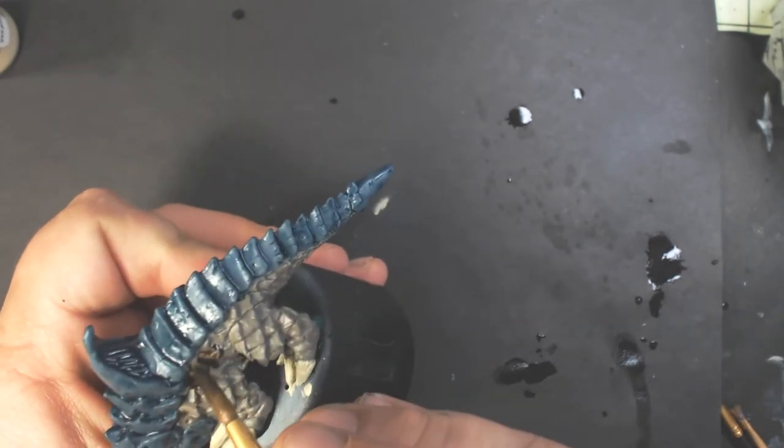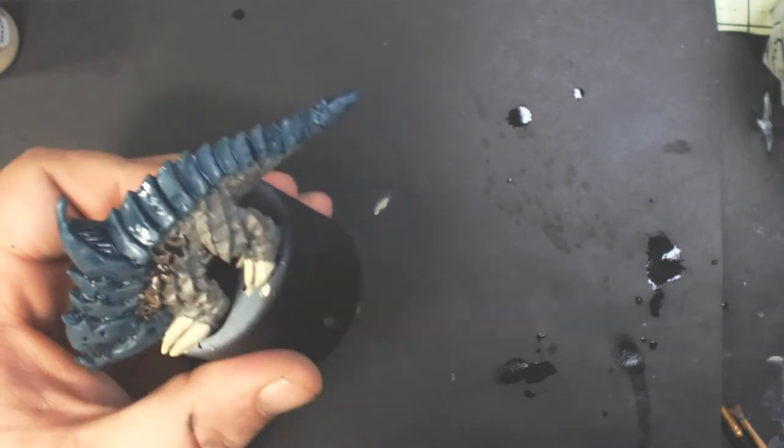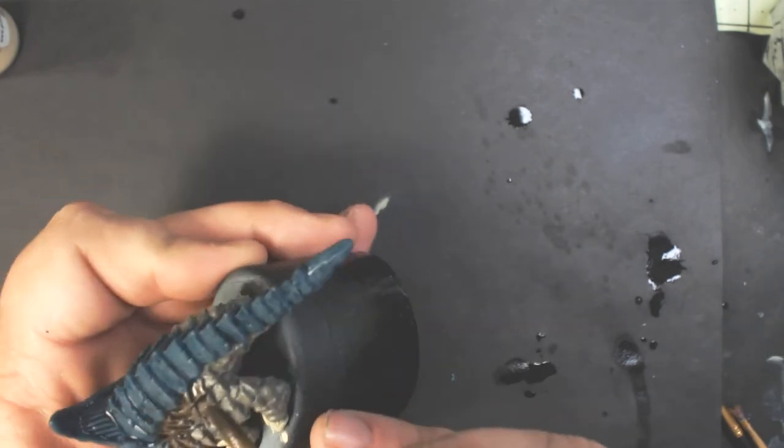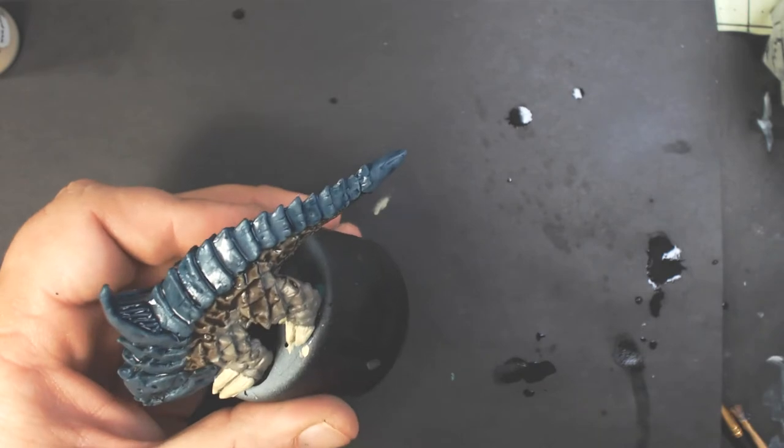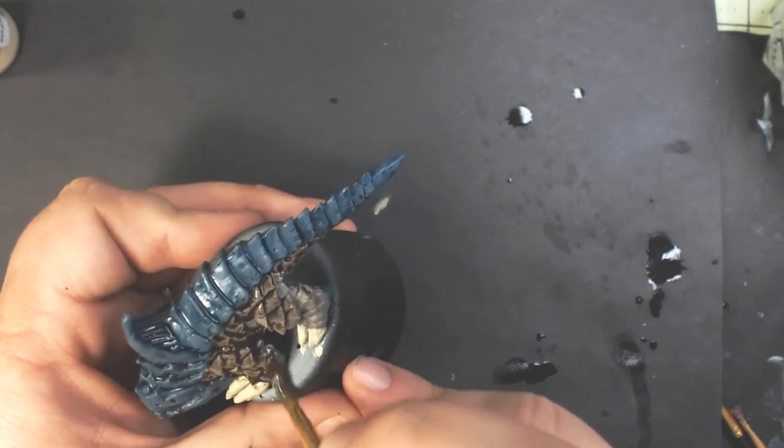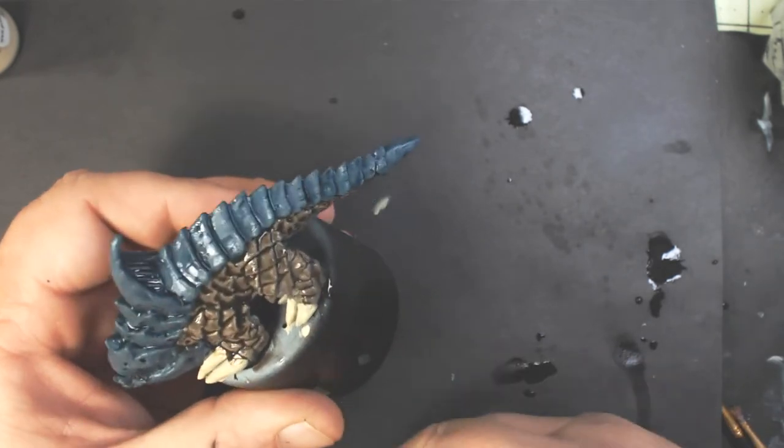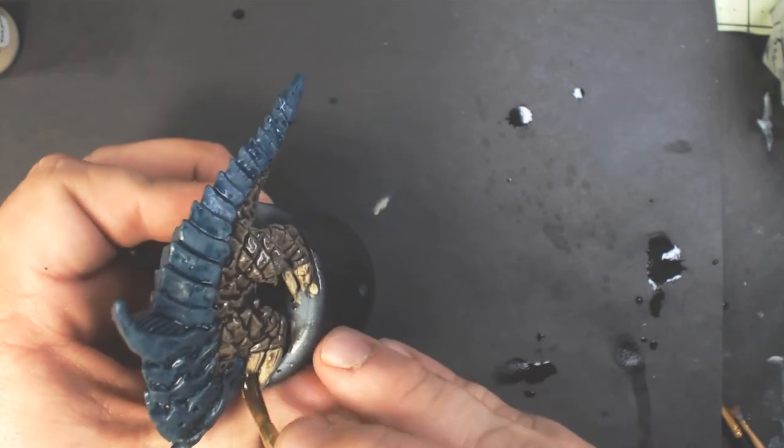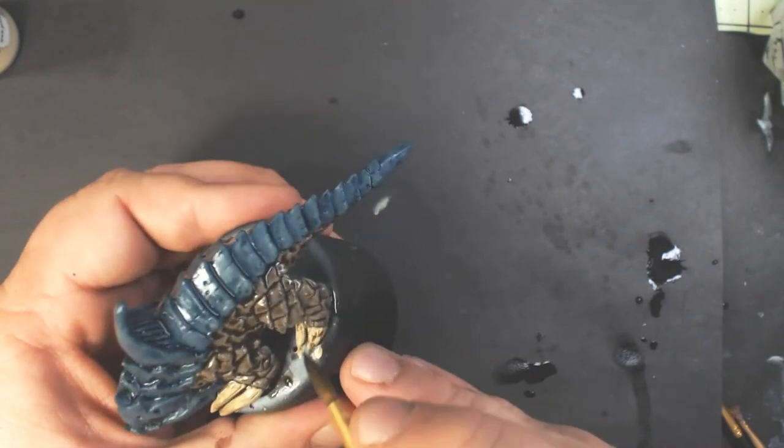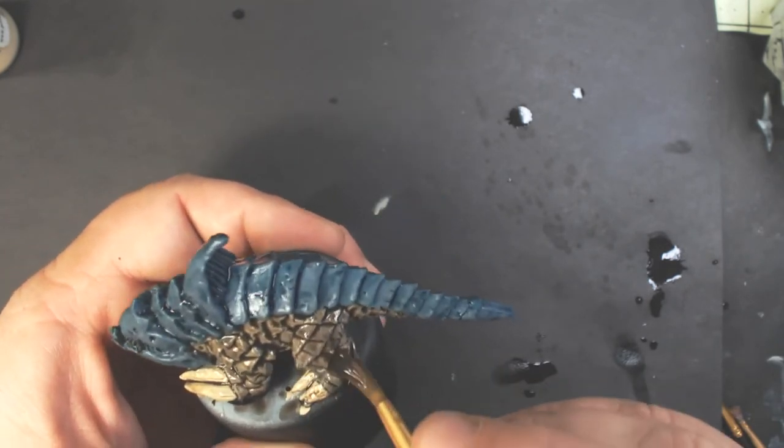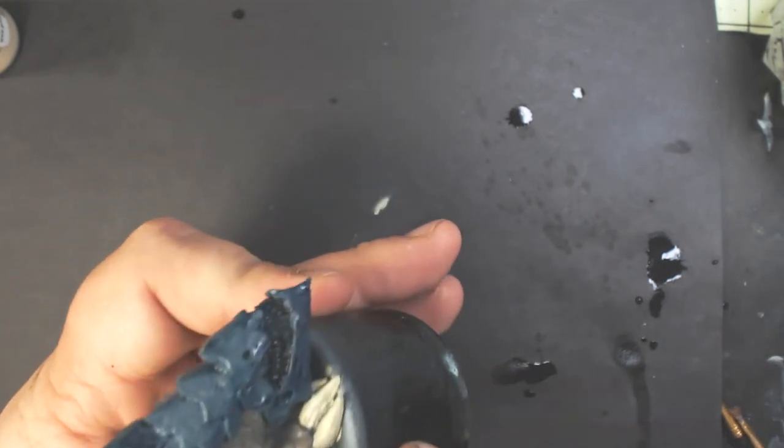Alright now we've got Army Painter Strong Tone. And this is a dark brown wash. And we will use that on all of the gray and the claws. You can also use Agrax Earthshade.